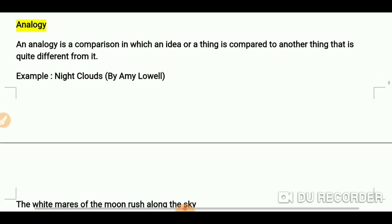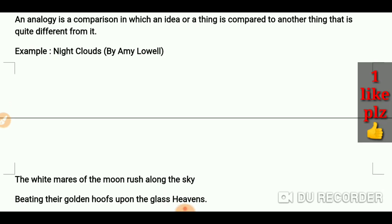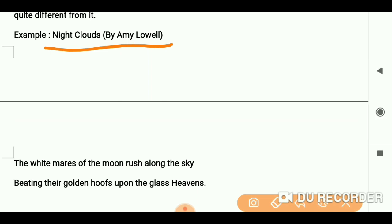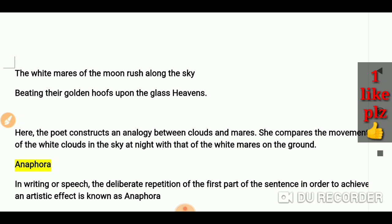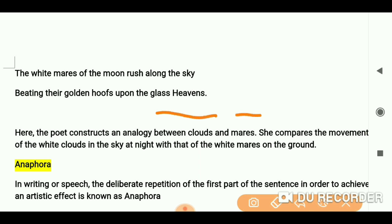My example is from 'Night Clouds' by Amy Lowell: 'The white mares of the moon rush along the sky, beating their golden hoops upon the glass heavens.' Here the poet constructs an analogy between clouds and mares. As you can see, clouds and mares are two quite different things, but the comparison is made.